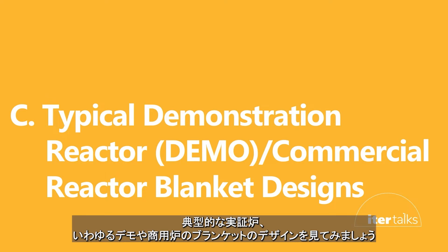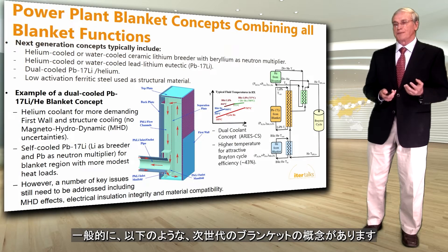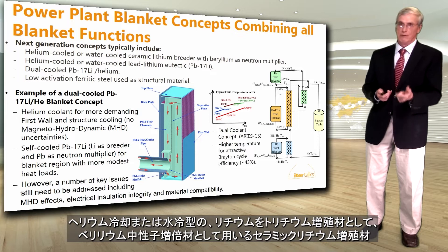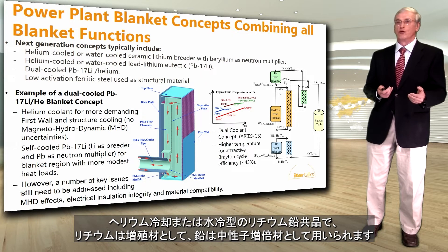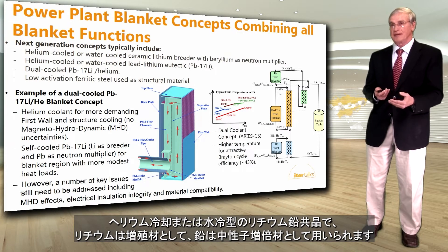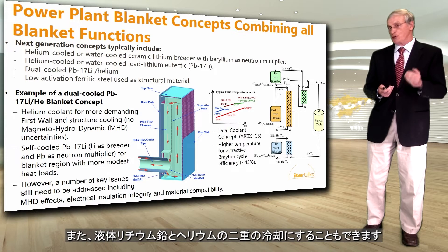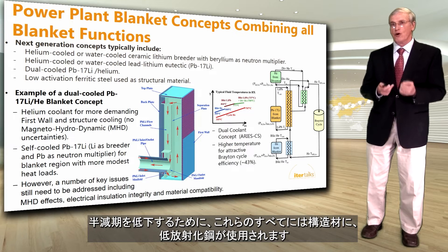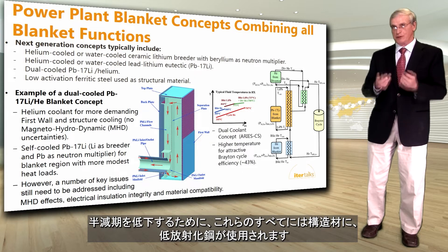Let's look at typical demonstration reactor, so-called DEMO, or commercial reactor blanket designs. Typically the next generation concepts would include either helium-cooled or water-cooled ceramic lithium breeder, where lithium is used to breed tritium with beryllium as a neutron multiplier. It could also be helium-cooled or water-cooled lead-lithium eutectic, where lithium is the tritium breeder and lead is the multiplier. It could also be a dual-cool liquid lead-lithium and helium. All of these will use low-activation ferritic steel as a structural material to have a structural material with a reduced half-life.